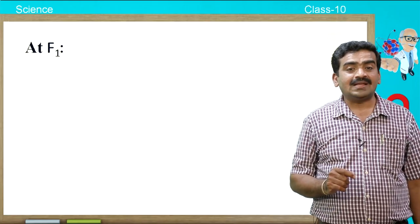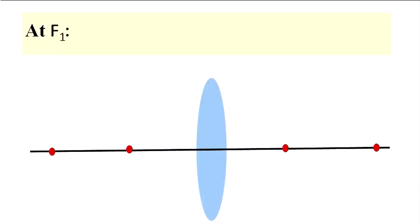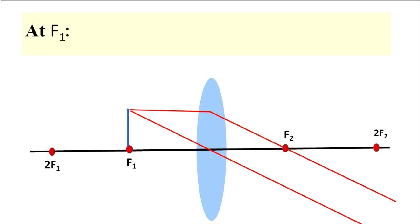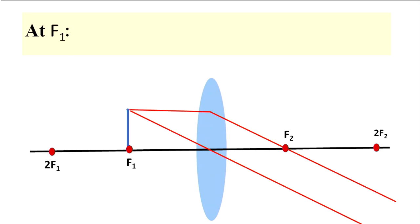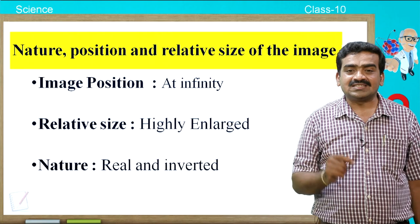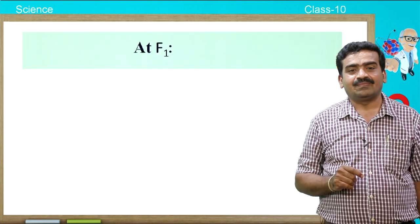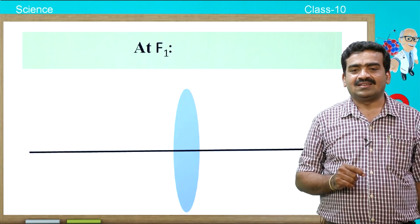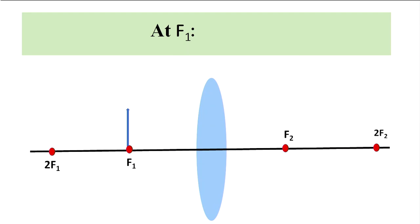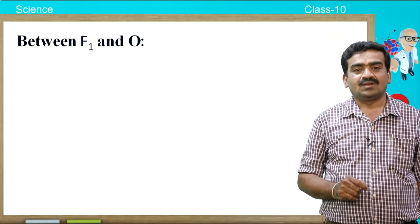What happens if you place the object at the principal focus, that is at F1? If you place the object at F1, the refracted rays are like this — the ray diagram indicates the image position is at infinity, the relative size is highly enlarged, and the nature of the image is real and inverted.